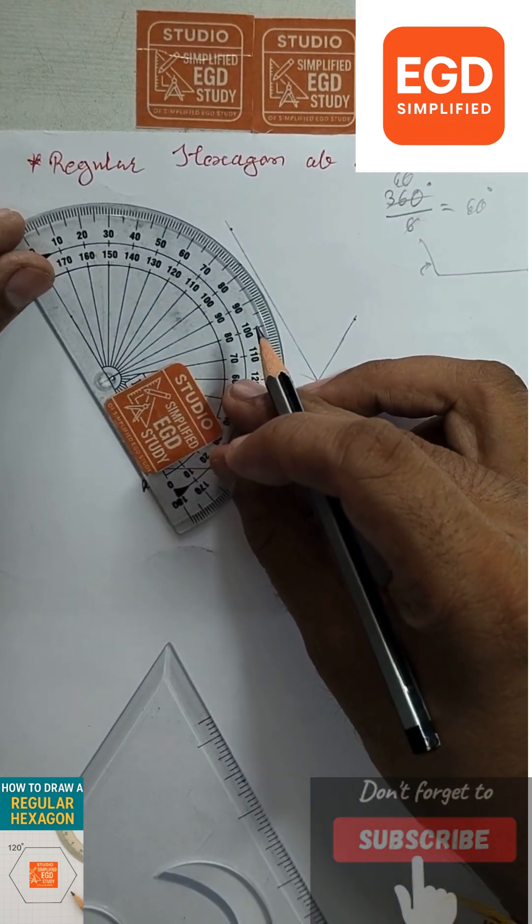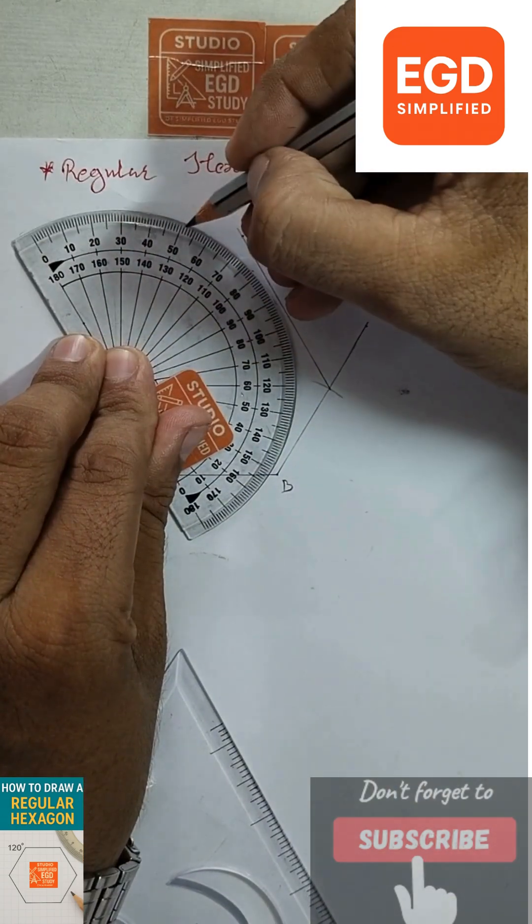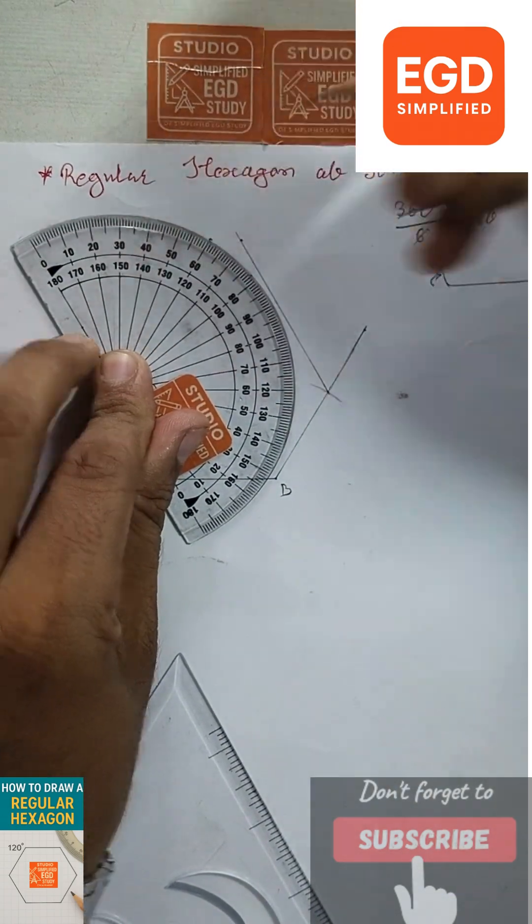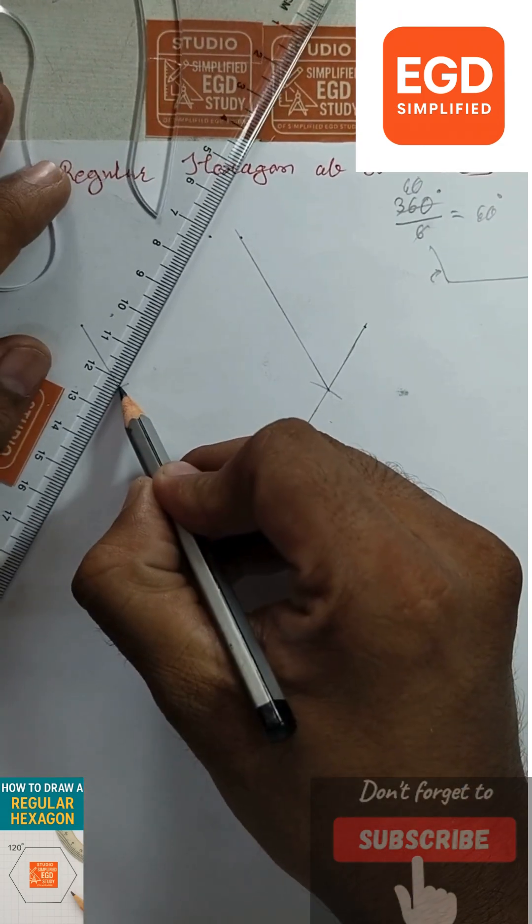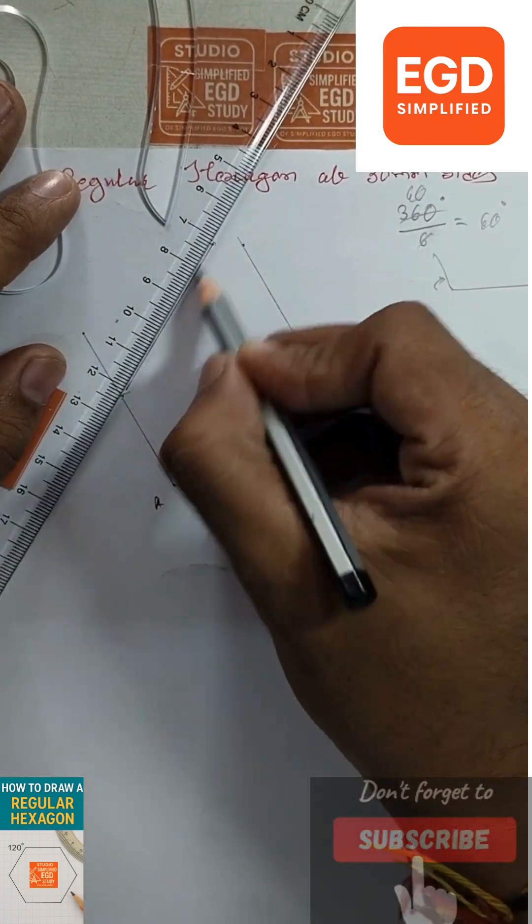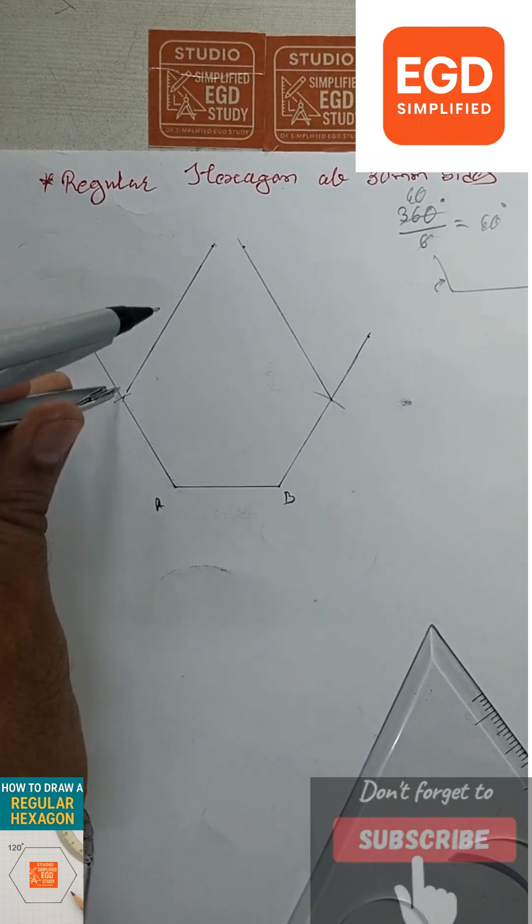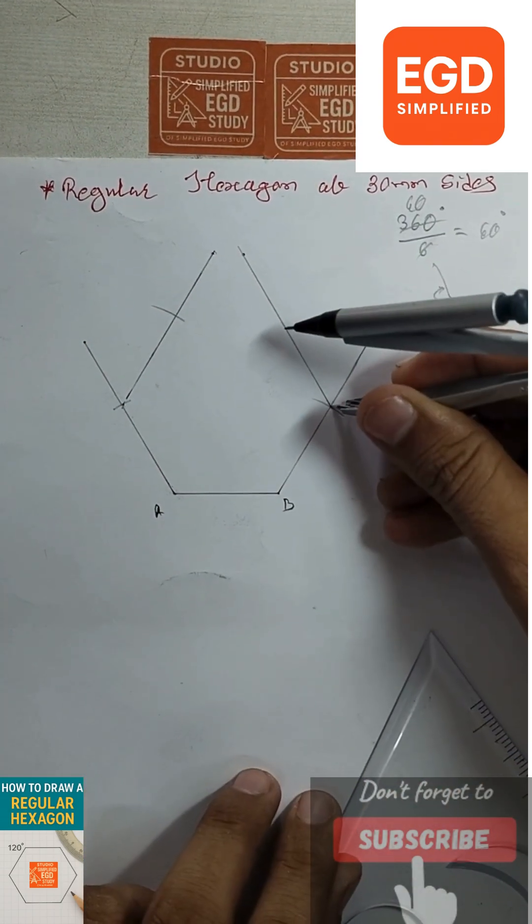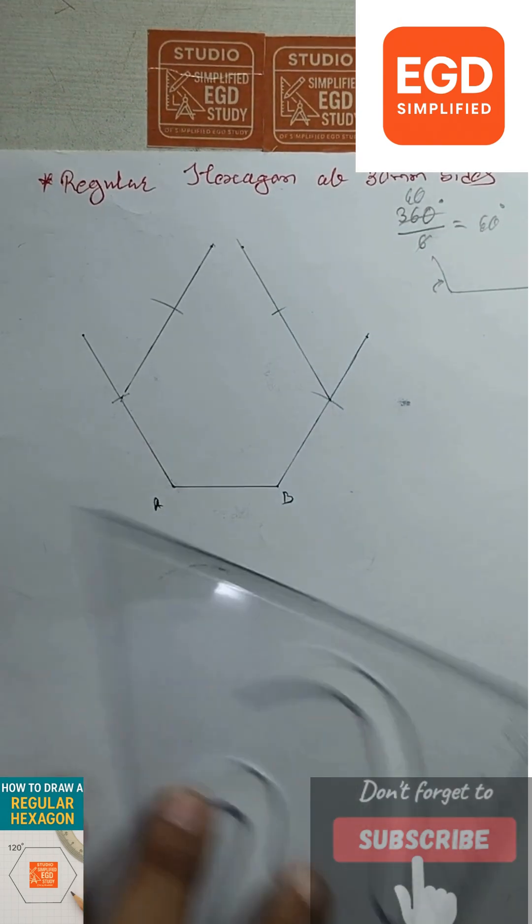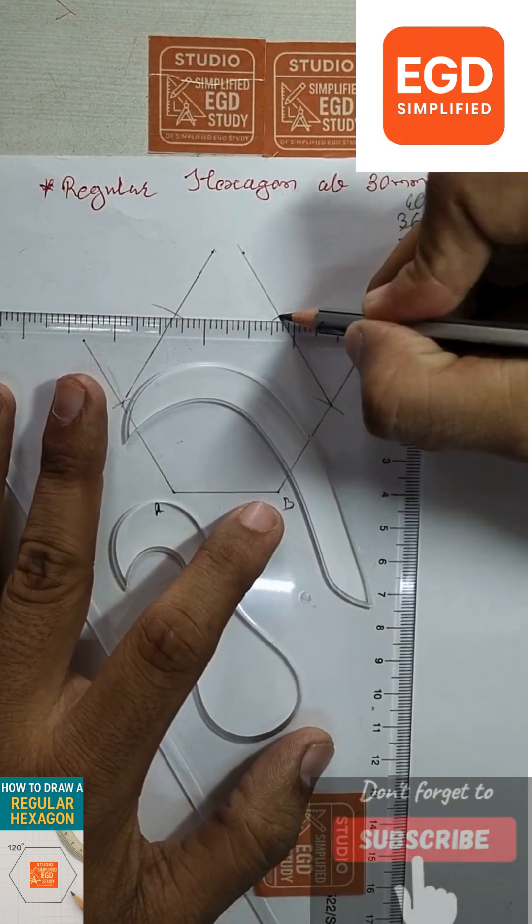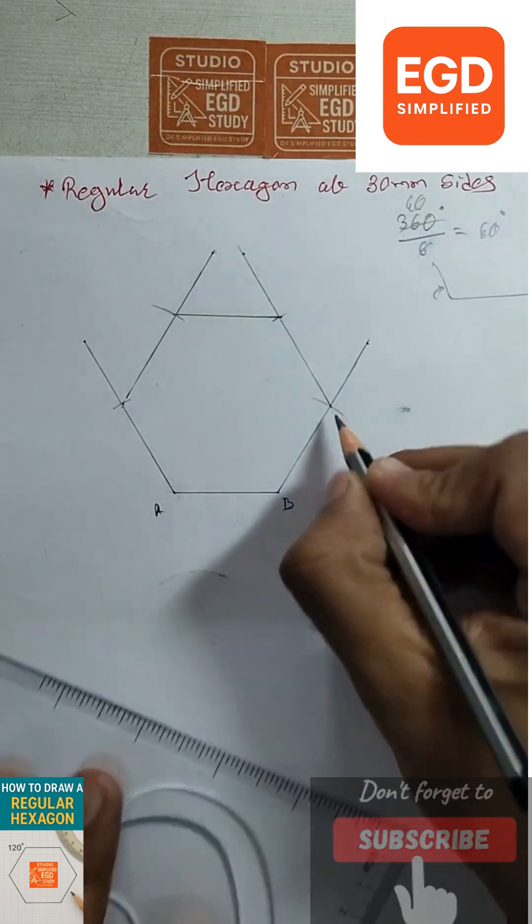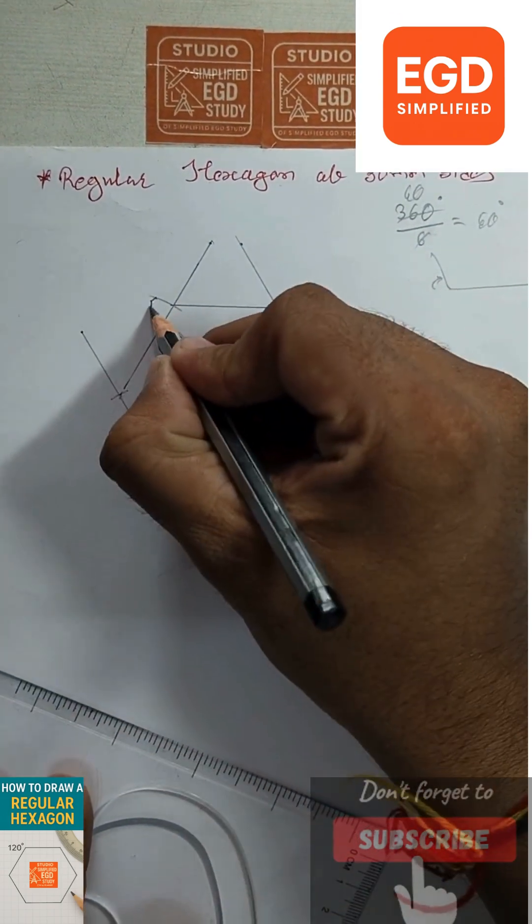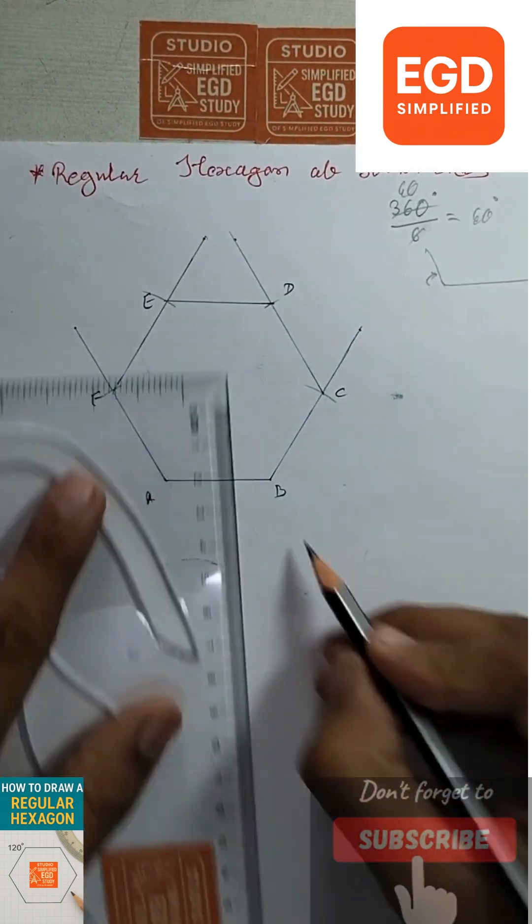Take the compass again and draw arcs of the same 30mm measurement, and connect these two arcs. This will give us a regular hexagon of 30mm sides.